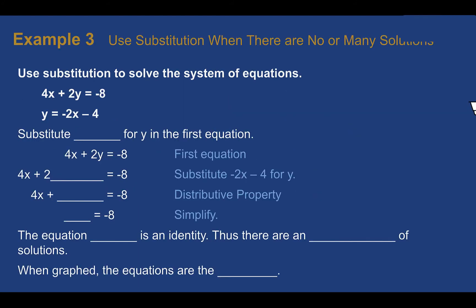Example 3. Use substitution when there are no or many solutions. Just like with graphing, if we solve by substitution, there's also going to be times where there's infinite solutions or no solution. So going through, let's substitute negative 2x minus 4 into the equation, multiply it out like we were doing. Again, as we go through combining like terms, we end up with negative 8 equals negative 8. My variable disappeared, so I can't solve for it. Because I can't solve for the variable, that tells me that there's either no solution or many solutions, infinite solutions.